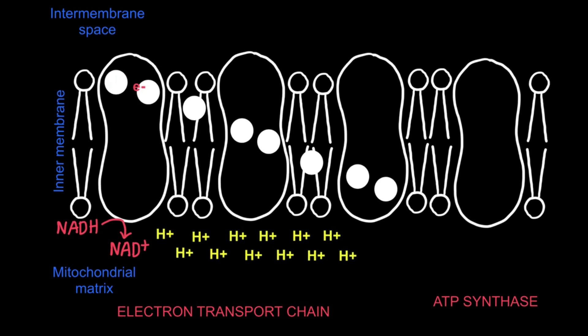Those electrons are then passed down a series of electron carriers found in the inner membrane, each successive carrier having a slightly higher electronegativity, or a stronger attraction for the electrons. As this happens, energy is released and this energy is used to pump protons or hydrogen ions via active transport into the intermembrane space.